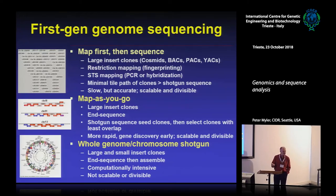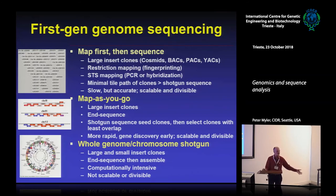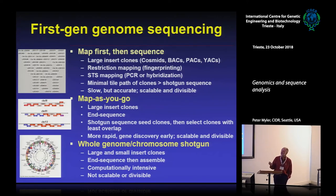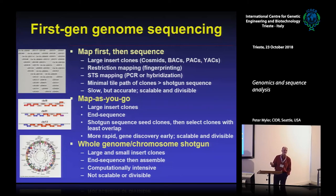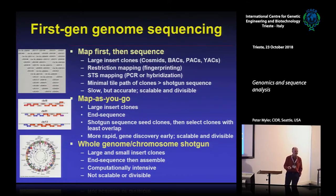By that stage the field had moved on to whole chromosome shotgun sequencing. You'd isolate chromosome DNA, cut it into small-insert plasmid clones, sequence the plasmids, throw all the data into a computer and assemble. It was computationally intensive — a day on a computer to assemble a 40-kilobase cosmid. By the early 2000s you could do a chromosome of several hundred kilobases in a few hours, and by the mid-2000s whole genomes that way. Now it takes minutes to sequence and assemble an entire parasite genome, maybe a couple of hours for the human genome. Things have moved on quite a bit.